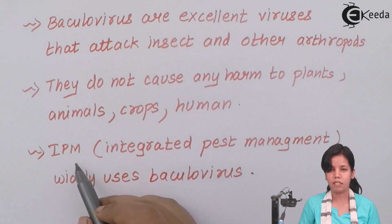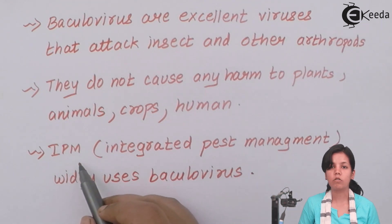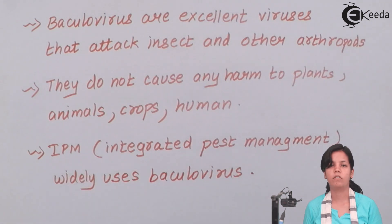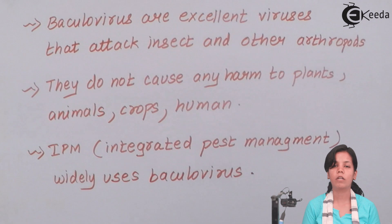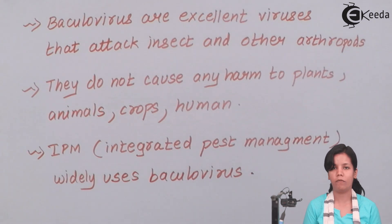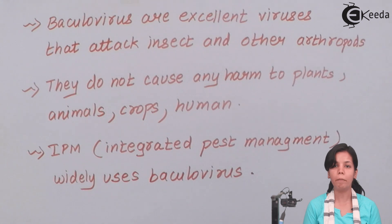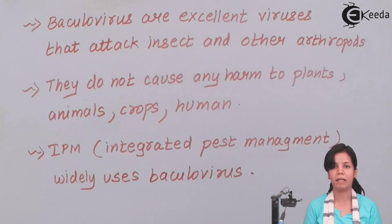IPM — Integrated Pest Management — uses Baculoviruses extensively to kill harmful organisms. In this part of the chapter, we studied Bio-Control Agents like Bt-Cotton, Trichoderma, and Baculoviruses, and what their effect is on plants and humans and how they help plants in a better way compared to chemical means.